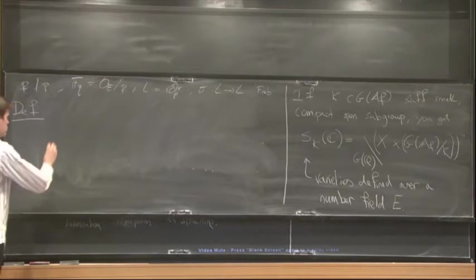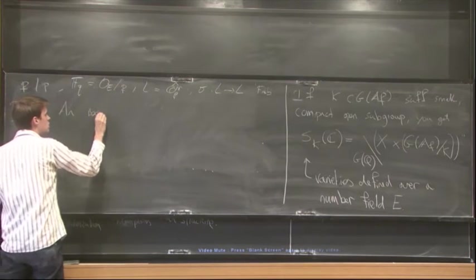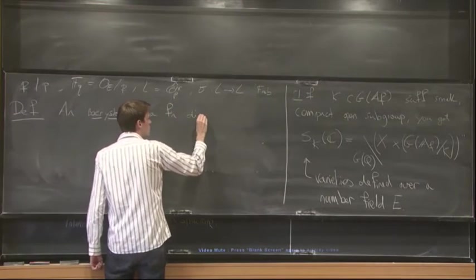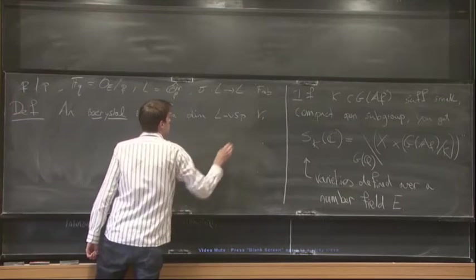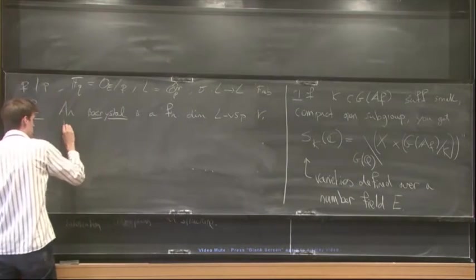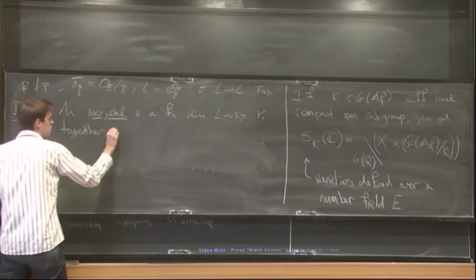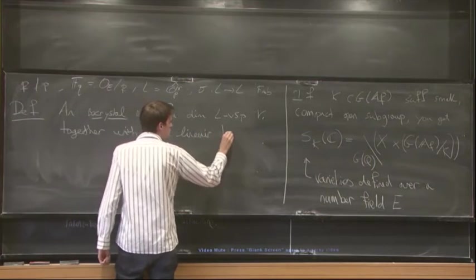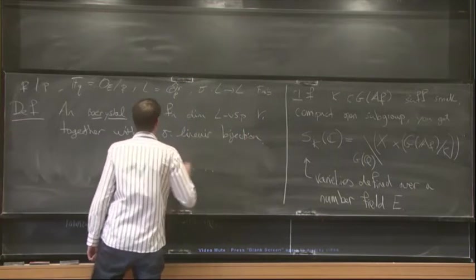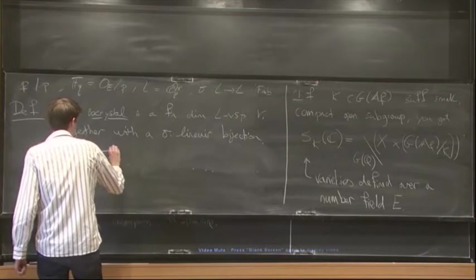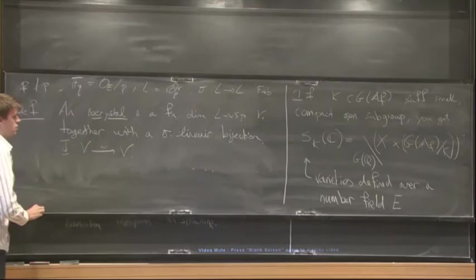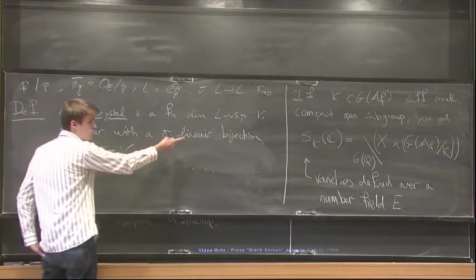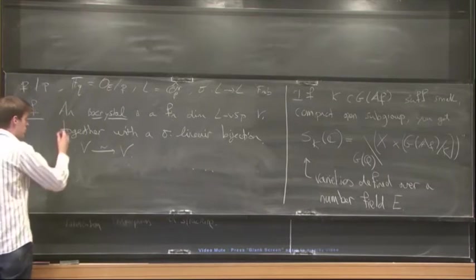So then definition, an isocrystal is a finite dimensional L vector space V, together with a sigma linear bijection Phi from V to V. So these isocrystals, they form a category. And you can take tensor products of isocrystals. So it's actually a tensor category.